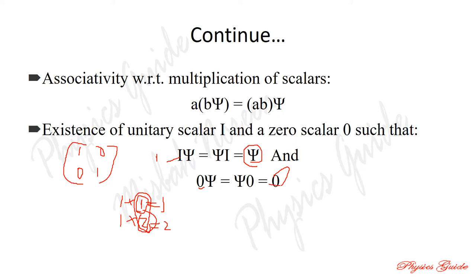If we satisfy all the properties of addition and multiplication rules, then we can say that this is a linear vector space. The concepts of addition rules, multiplication rules, and linear vector space should now be clear.